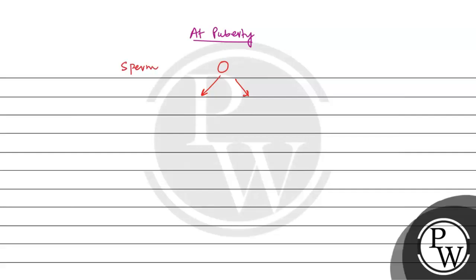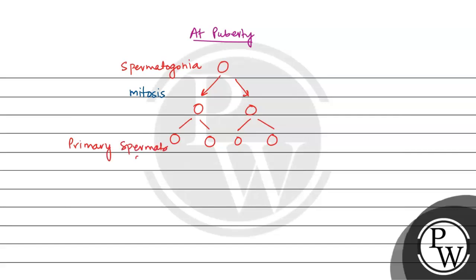At puberty, the spermatogonia undergo mitosis, and from spermatogonia, the primary spermatocytes are formed. The primary spermatocytes undergo the first meiotic division, and from the first meiotic division, the secondary spermatocytes are produced.